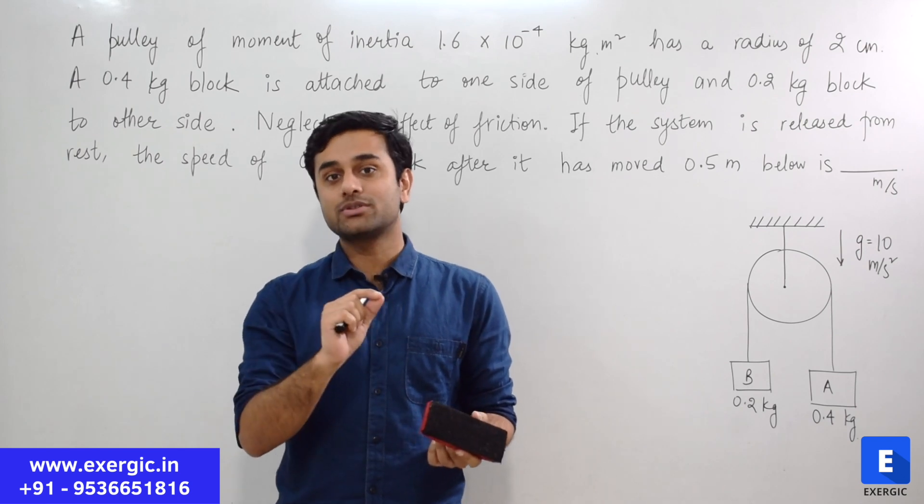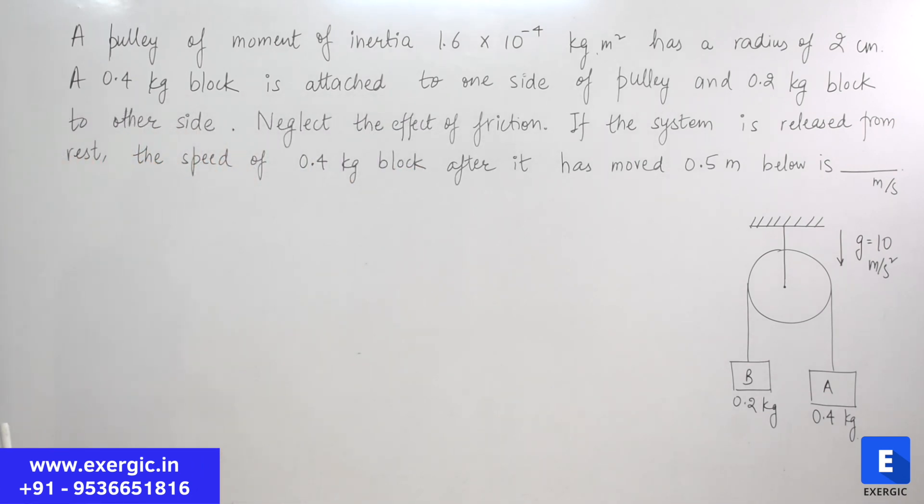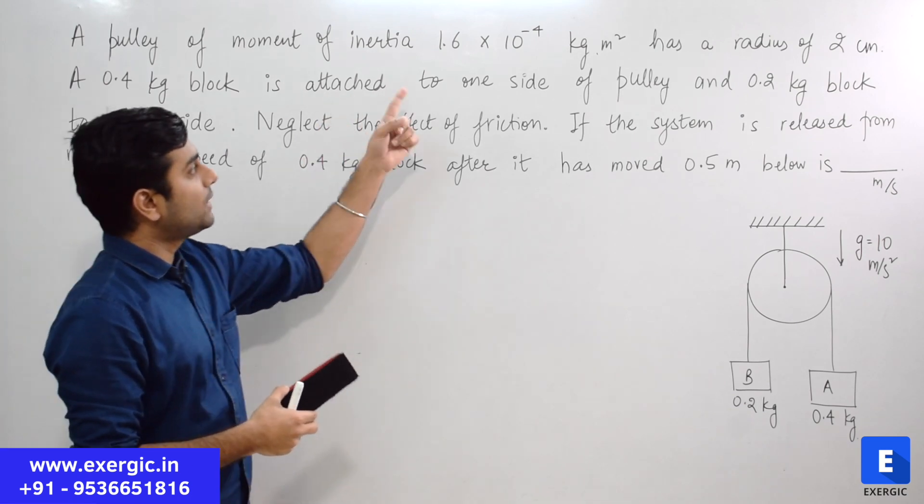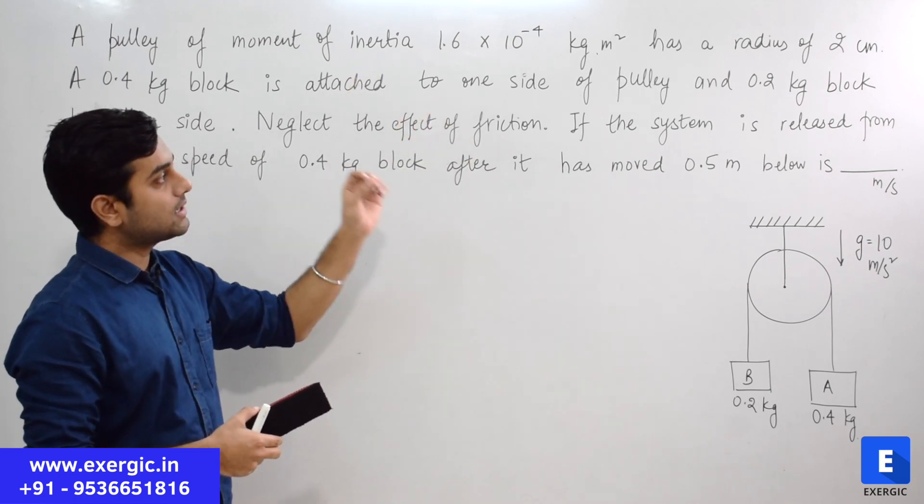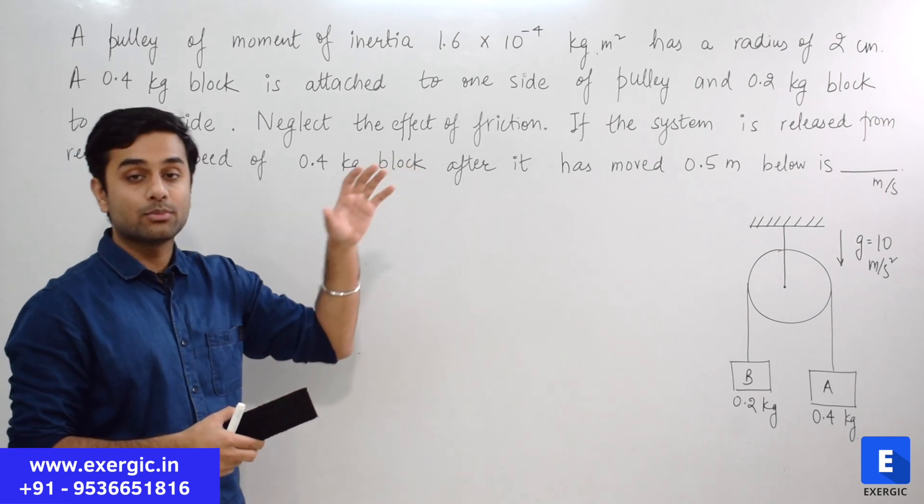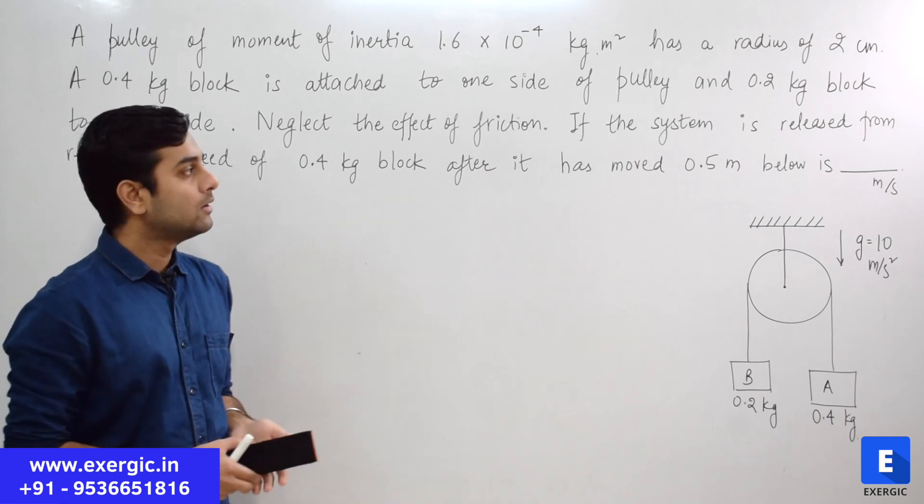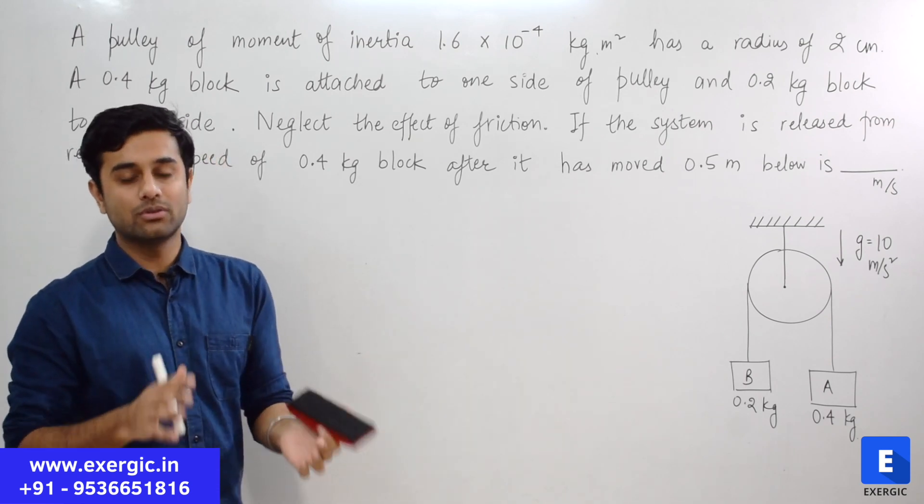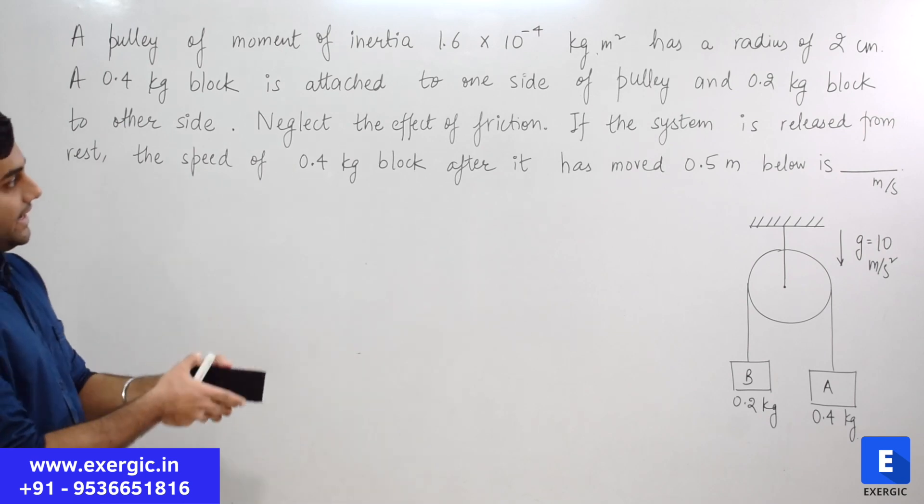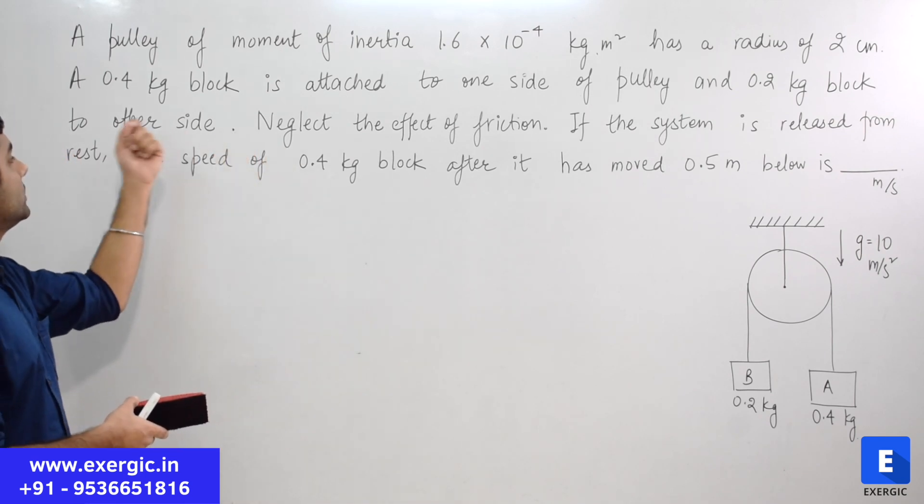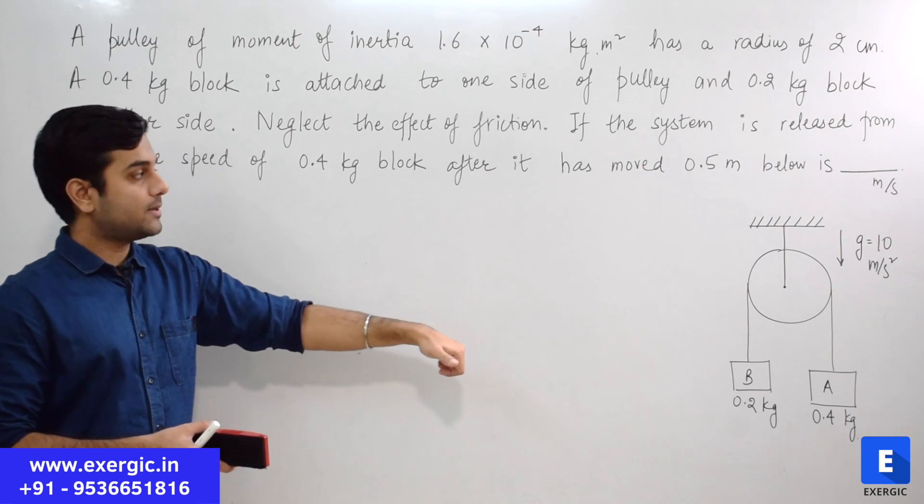And then I will show you the correct approach with the proper concept and reasoning. The question says that a pulley of mass moment of inertia 1.6 multiplied by 10 to the power minus 4 kg m squared has a radius of 2 cm. Very small pulley, but masses are also very small as you will see further. So it is a feasible situation.